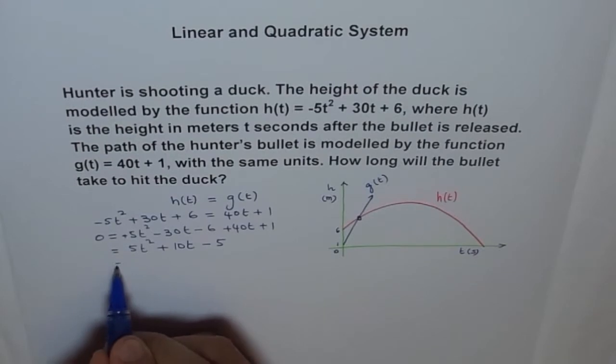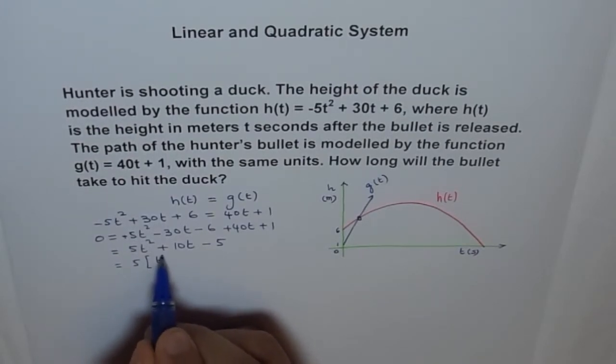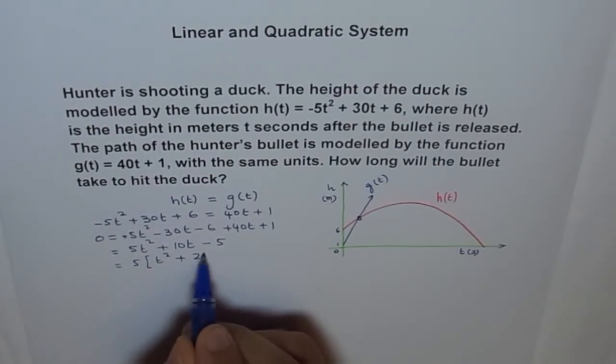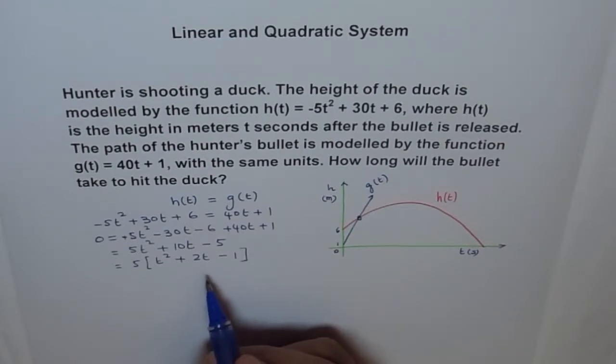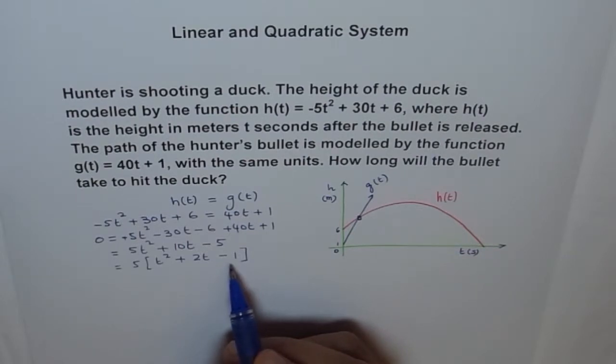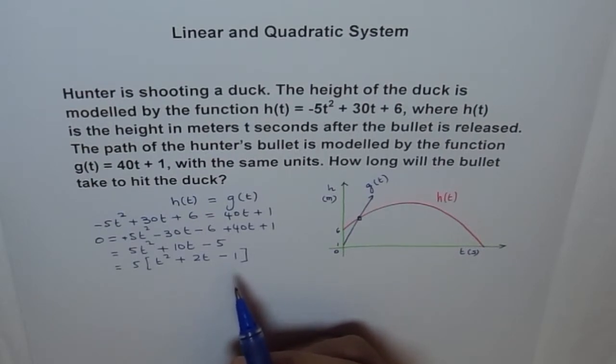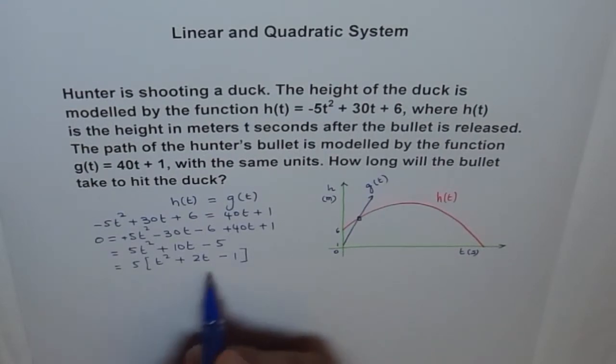Well, we can factor out 5 from here. So 5 and we get t² + 2t - 1. Now, can we do product and sum and factor this? That would be very easy. Product should be -1. That means 1 number is plus, 1 number is negative. And sum is 2. Well, it doesn't really work. If this would have been +1, I could have used 1 times 1 and 1 plus 1 is 2. But here, it doesn't really work. So what to do now? Now, we have no other way but to use quadratic formula. So let's use quadratic formula.